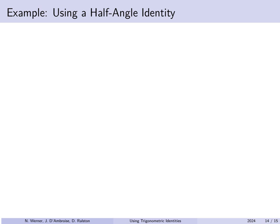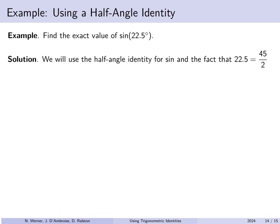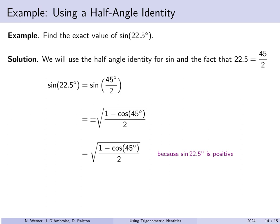Let's find the exact value of the sine of 22.5 degrees. Observe that 22.5 degrees is exactly half of 45 degrees. Using the half angle formula for sine, the sine of 22.5 degrees equals plus or minus the square root of (1 minus cosine 45 degrees) over 2. Since 22.5 degrees is in quadrant one where sine is positive, we take the positive square root and substitute the known value of cosine 45 degrees to get the exact value.